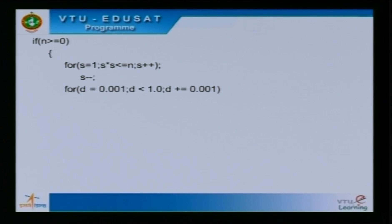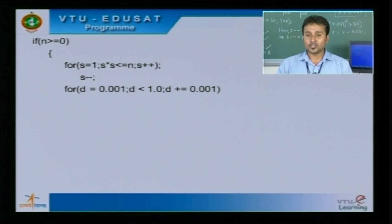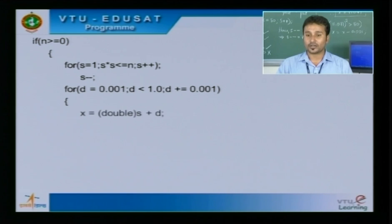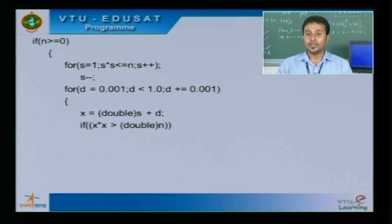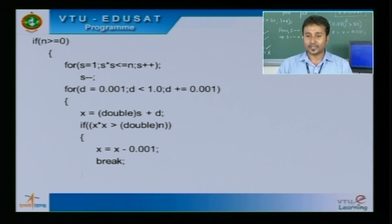The next for loop calculates the fractional part of the square root. Variable d is initialized to 0.001 and extends up to 0.999, so the condition is d less than 1.0, incrementing by 0.001 each step. Inside this loop, x equals (double)s plus d — this is type casting or type conversion. If x*x is greater than (double)n, we subtract 0.001 from x, then break out of the loop.